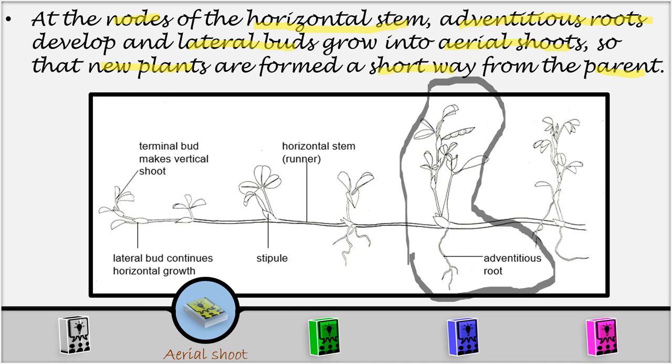We have our new plant here growing a short distance away from the parent plant. Now, you will see, after some time, another plant will again grow a short distance away from another parent plant. So, the horizontal stem goes on moving away from the parent, and as it goes on, at every node we shall have the lateral buds, which will grow aerial shoots, and then also adventitious roots.